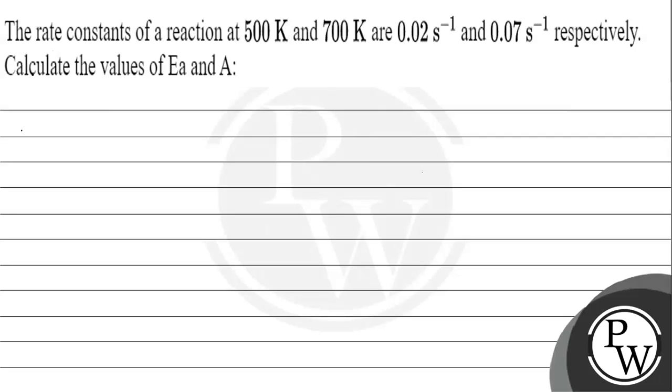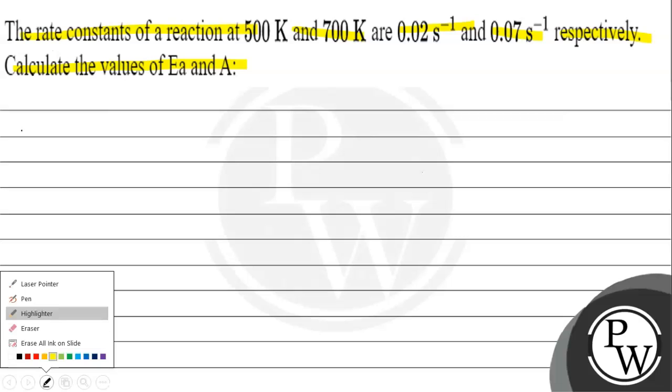Hello, let's read this question. The question says, the rate constants of a reaction at 500 Kelvin and 700 Kelvin are 0.02 per second and 0.07 per second respectively. Calculate the values of energy of activation and Arrhenius constant.